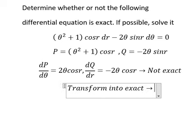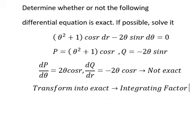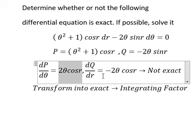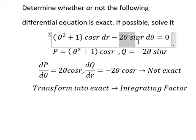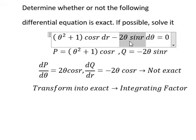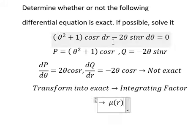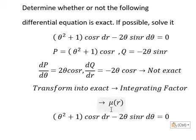In this situation, we need to transform into an exact equation. That means we can use an integrating factor. If we look carefully, we have 2 theta cosine r and 2 theta cosine r — that means we need to choose mu as a function of r. If we choose mu of r, we need to select mu of r here, and we multiply both sides by this one.